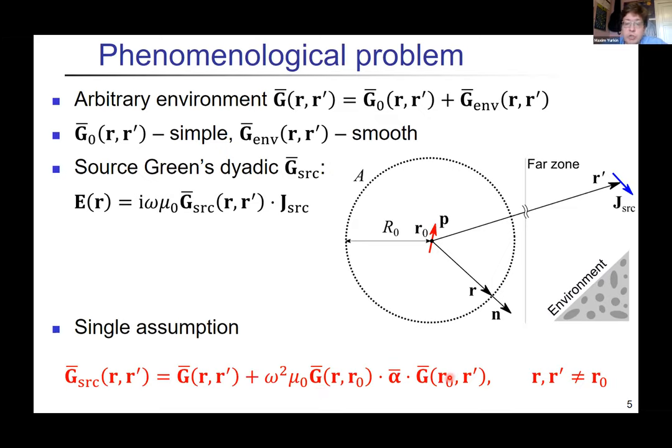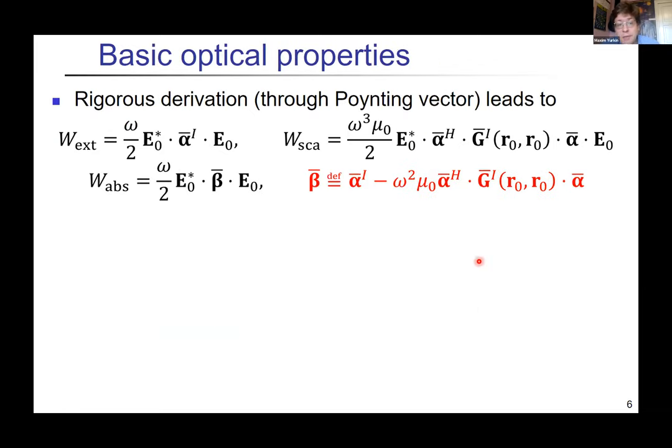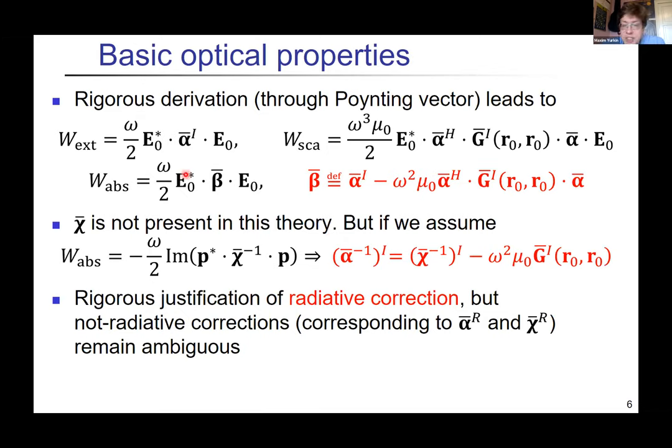You need to define the source Green's dyadic, and once you do it you can take a small sphere around the dipole which is much smaller than distance to environmental sources, then integrate the Poynting vector around it. From this you can rigorously derive all the quantities which I mentioned previously. Here β is a convenient definition—it looks complicated but mostly because we use general tensorial description. This description does not need χ at all because we have only a single assumption containing α as a phenomenological constant.